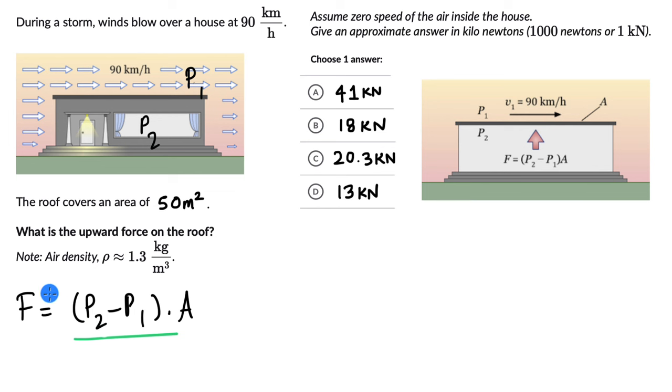Now this is the force, P₂ minus P₁ times A. Using Bernoulli's principle, we can figure out the pressure gradient. Let's first write Bernoulli's equation: P₁ + ½ρV₁² + ρgH₁ = P₂ + ½ρV₂² + ρgH₂.